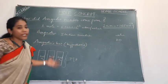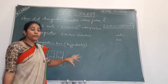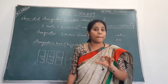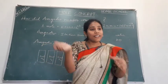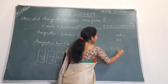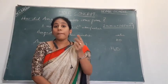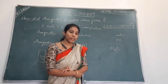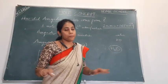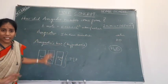Once Avogadro came into the field, by introducing Avogadro's law, he gave an idea about the ratio of atoms combining with each other. Avogadro was the person who told that the formula of water is H₂O — that two atoms of hydrogen would combine with one atom of oxygen. Later this formula was confirmed and proved by many experiments.